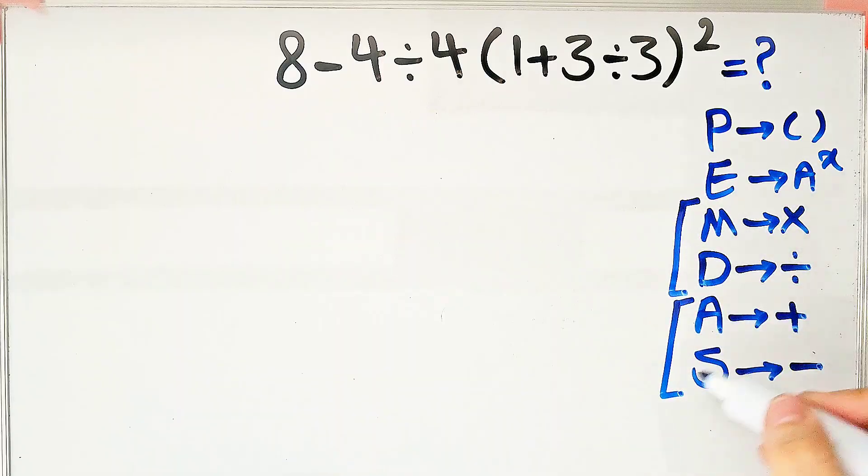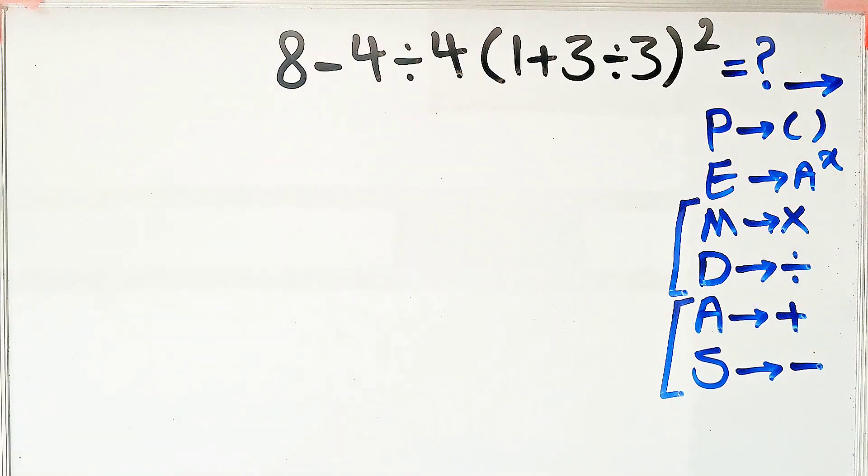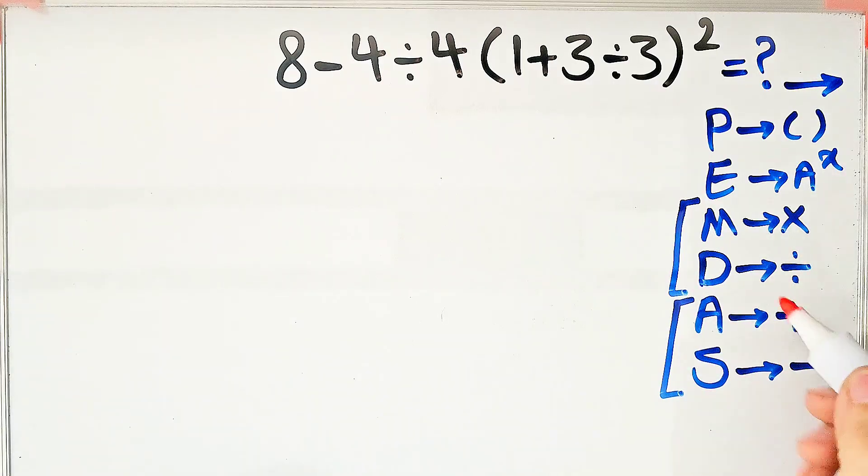When we have both in an expression, we start from the left and simplify the question according to the PEMDAS rule.